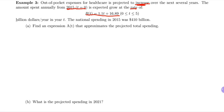This is measuring billions of dollars per year in year T. The national spending in 2015, our time zero, was $410 billion. So this is important. We're given that the initial amount at time zero, so if we plug in T equals zero, we should get $410 billion.